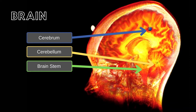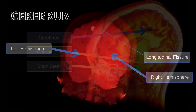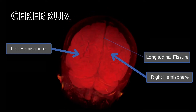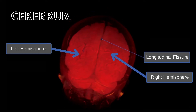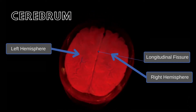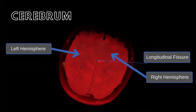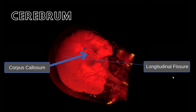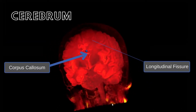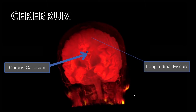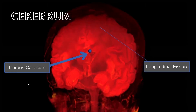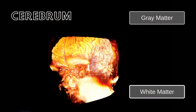The first division of the brain is the cerebrum, which is the largest part of the brain, and is composed of the right and left cerebral hemispheres divided by the longitudinal fissure. The two hemispheres of the cerebrum communicate with each other through the corpus callosum. Each hemisphere is composed of a highly convoluted cortex and an underlying white matter.